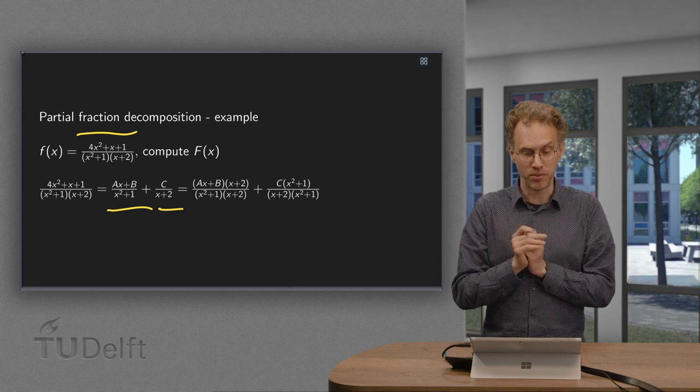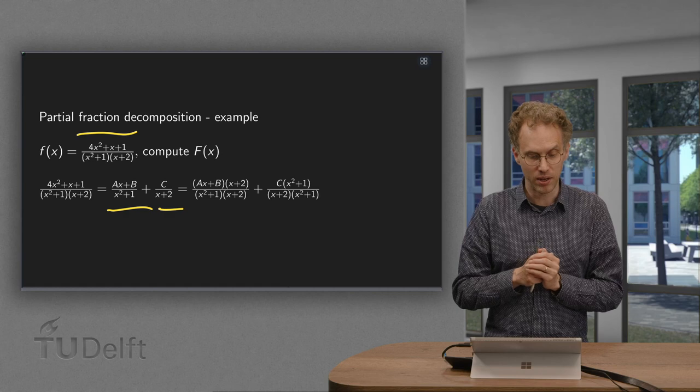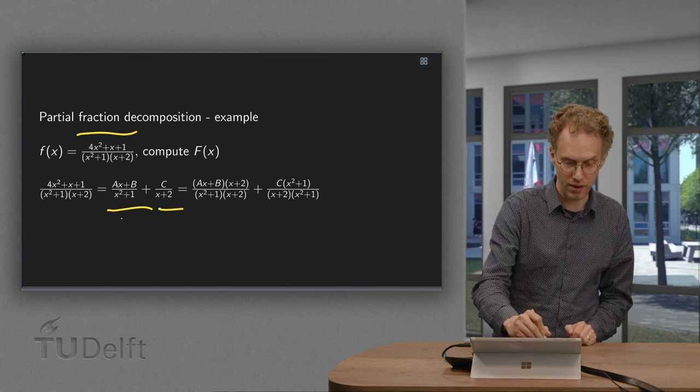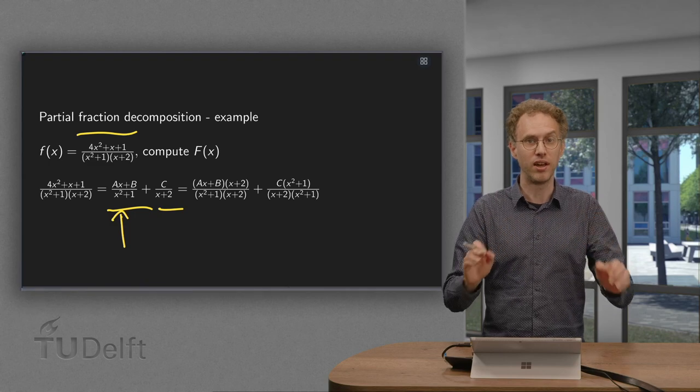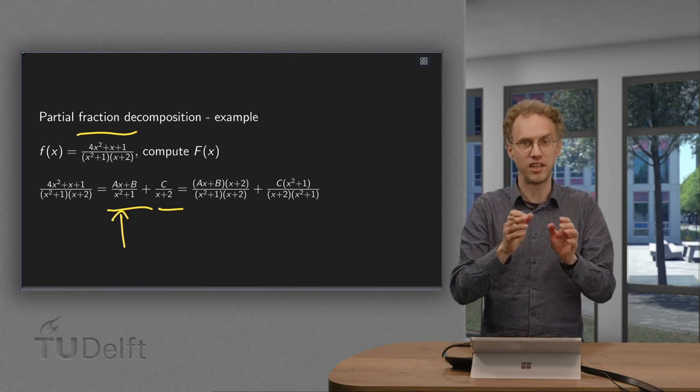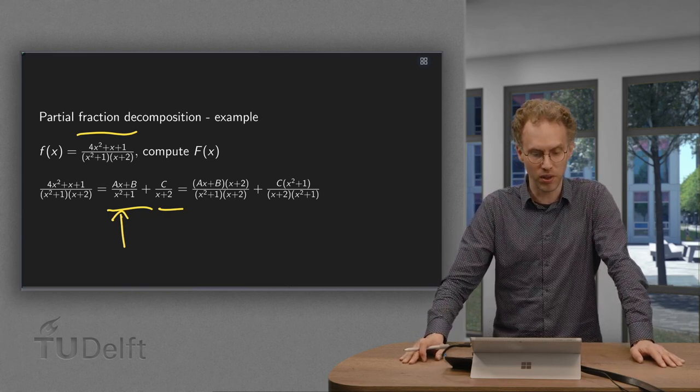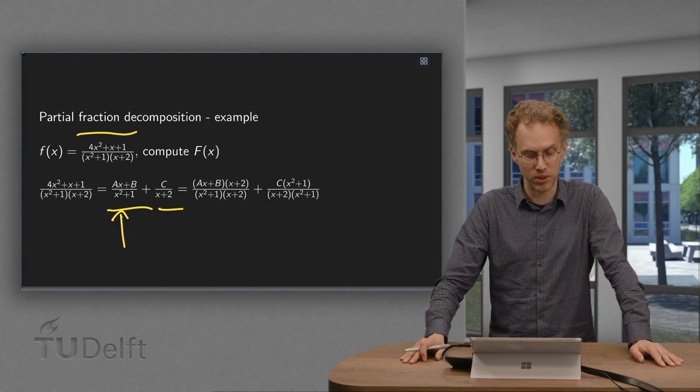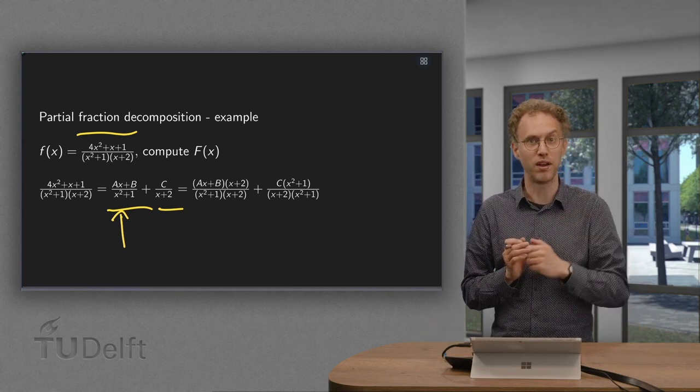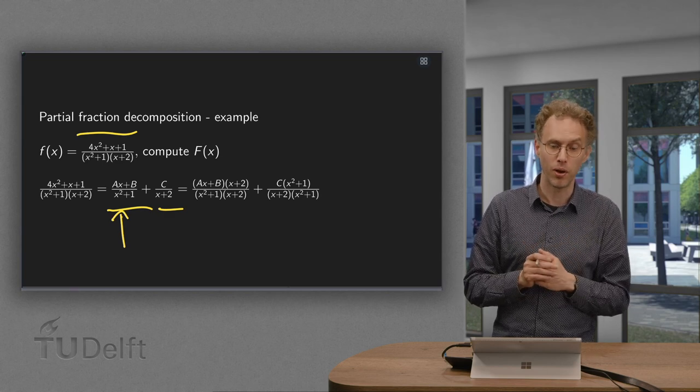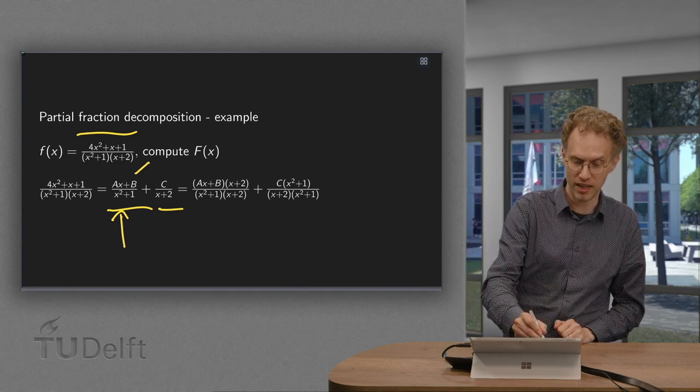So the something else is just a c divided by x plus 2. Now we have an x squared plus 1 over here for the first term, which you cannot write as x plus a times x plus b. So it is irreducible. Now it has complex roots. So you are stuck with x squared plus 1. So what do we have to put in the numerator? Well a polynomial of 1 degree lower. So in this case that would be an ax plus b.